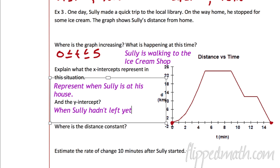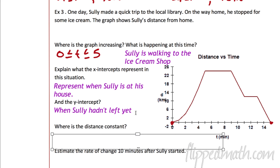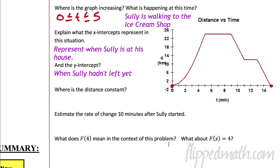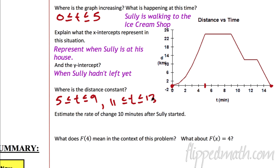Where is the distance constant? It is constant from about minute 5 all the way to minute 9, so from 5 to 9 in terms of t. And also from 11 to about 13. So we write it with our compound inequality.